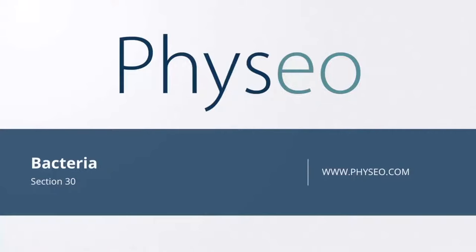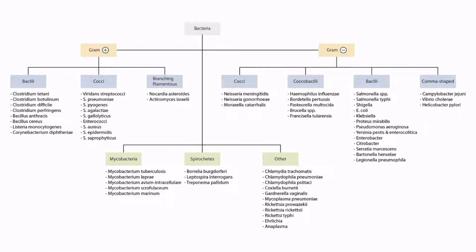Welcome to section 30 of Bacteria. This is our bacteria overview figure, and in this video we'll be discussing E. coli. Just a quick heads up, this one's kind of a beast because we'll be discussing E. coli in its entirety, including all of the important strains of E. coli. This information is riddled throughout textbooks and is super high yield for step one, so it's kind of long. But hang in there, and by the end of the video, you'll be an E. coli Jedi.